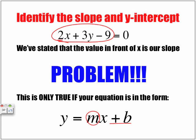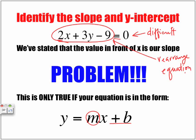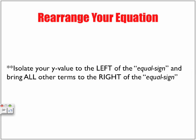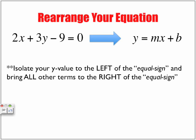Trying to identify the slope from this would be a little more difficult. So we have to rearrange our equation. Isolate your y value to the left of the equal sign and bring all other terms to the right. We want to convert it to y equals mx plus b.